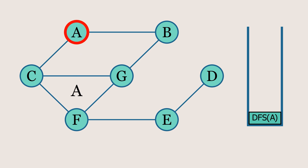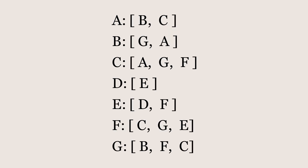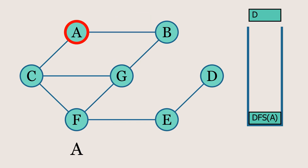First we'll print node A to mark the start of our DFS journey. Now we need to move to one of its neighbors. Since A has two neighbors, which one should we visit first? The order depends on how the nodes are stored in the adjacency list. In our case, node B appears before node C, so we'll follow that order and proceed to node B.